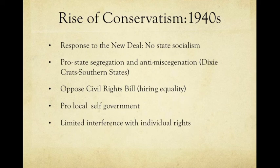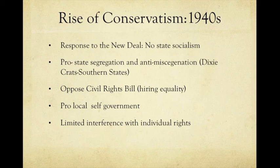Conservatism was also pro-state segregation and anti-miscegenation, which is basically intermarriage. This was in response to desegregation laws such as Brown versus the Board of Education, which came in the 1950s. Those who were pro-state segregation and anti-miscegenation were primarily called Dixiecrats, and they were in the southern states — kind of an offshoot of the Democrats at the time.